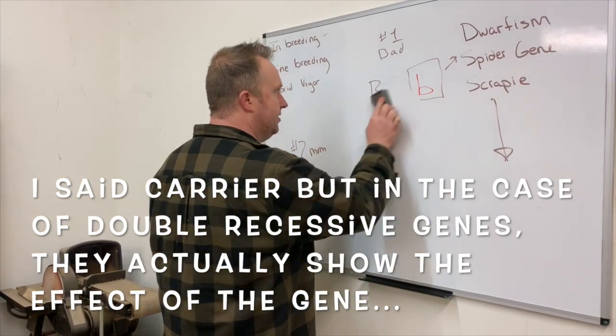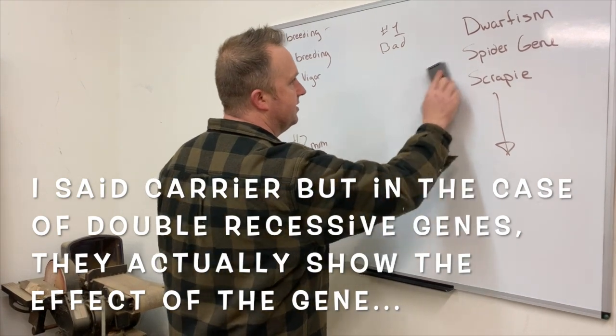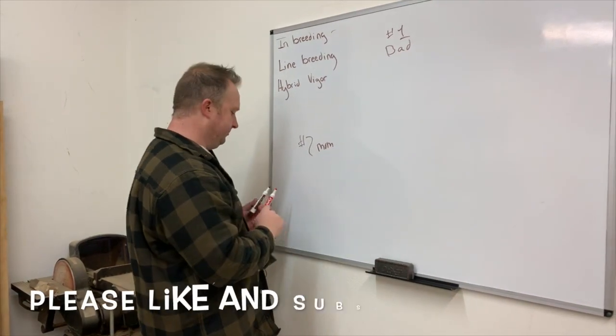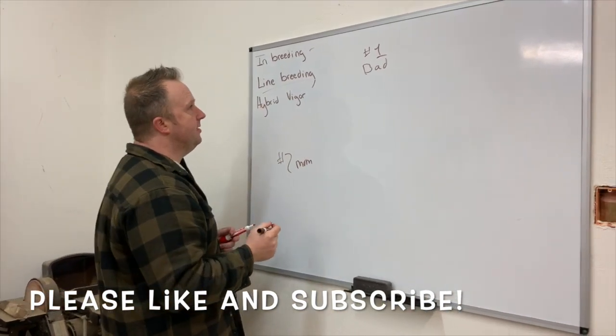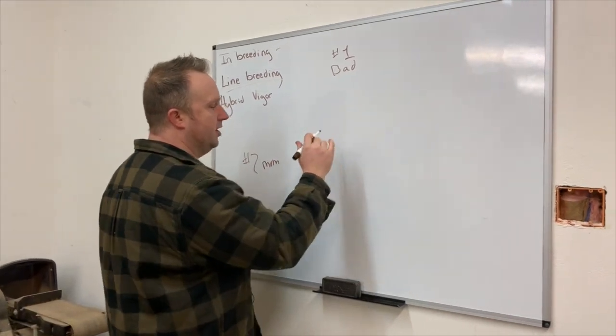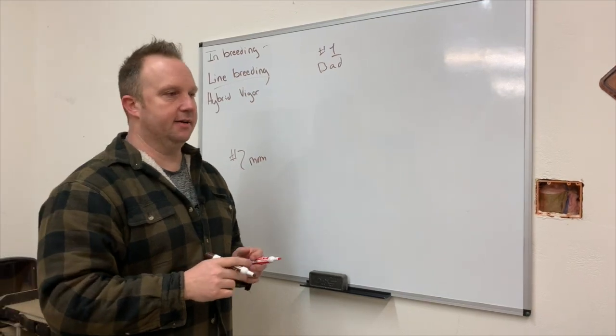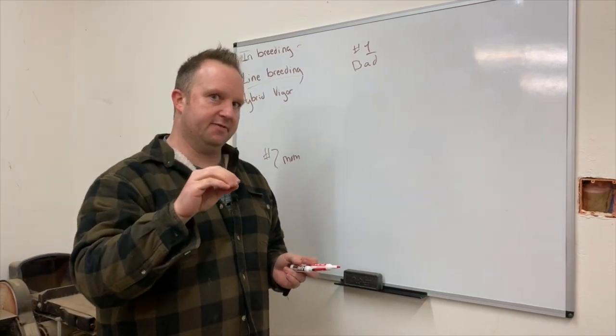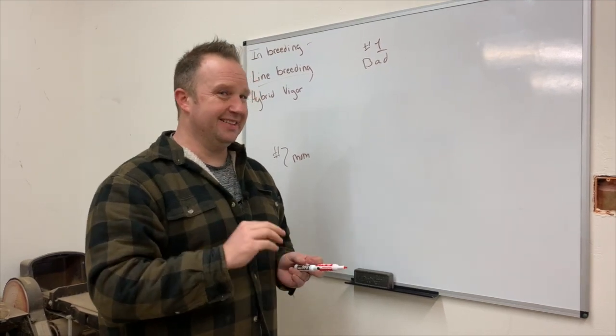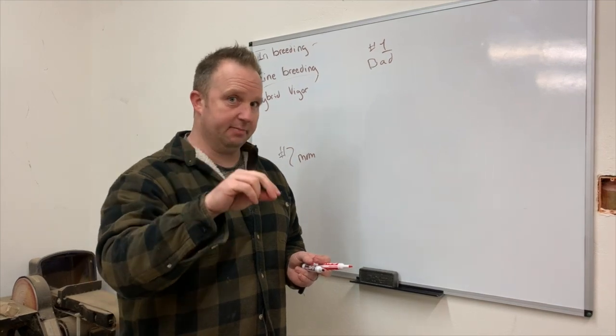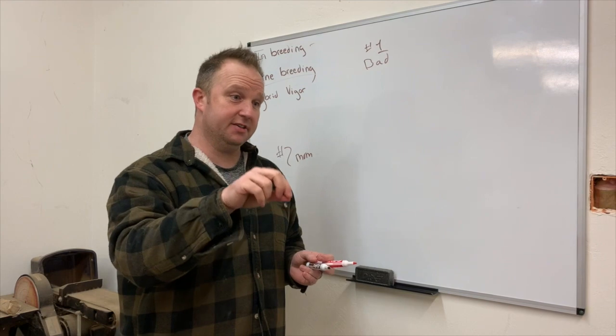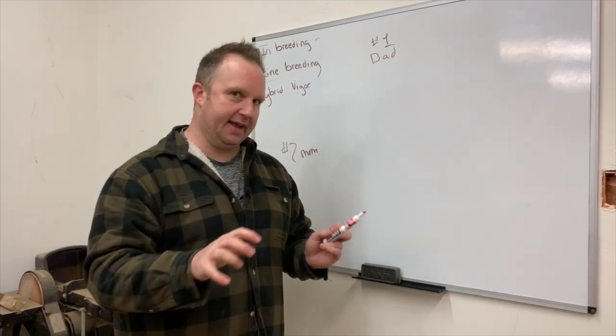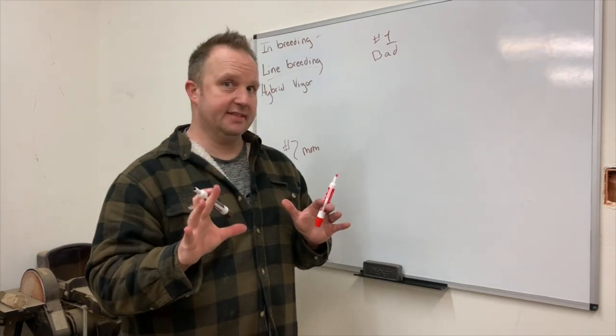This can be all kinds of genetic ailments - dwarfism, spider gene, scrapie. The list goes on and on. These are all recessive genes. You run into someone who's a carrier and you start back breeding, and eventually it comes up and bites you in the rear end. What is the answer? This is where I want you to understand the difference between line breeding and inbreeding.